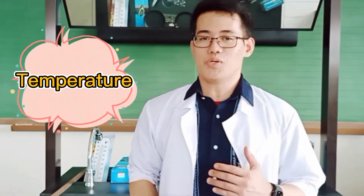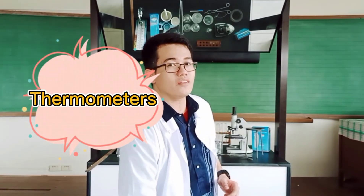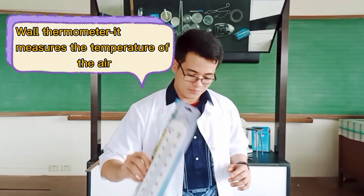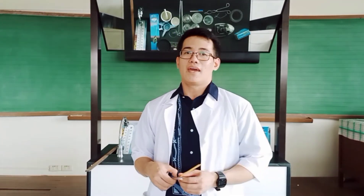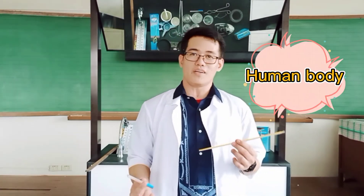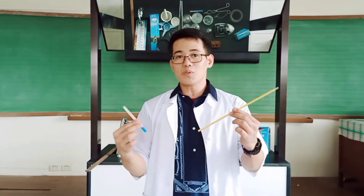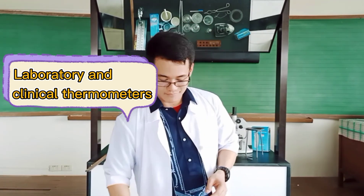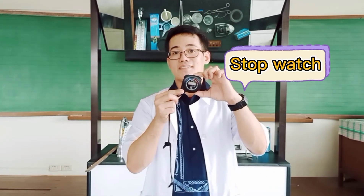To measure the temperature, we can use the different types of thermometers. The first one is the wall thermometer, which measures the temperature of the air. And to measure the temperature of the human body and the hotness and coldness of liquid substances, we can use the laboratory and clinical thermometers. And to measure the time, we can use the watch or a stock watch.